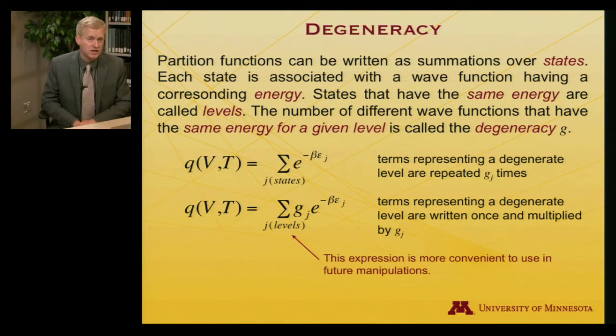I've talked about state being a possible energy. Each state is associated with a wave function having that energy. But states that have the same energy are called levels. The number of different wave functions that have the same energy for a given level is called the degeneracy, and we might write that as g.